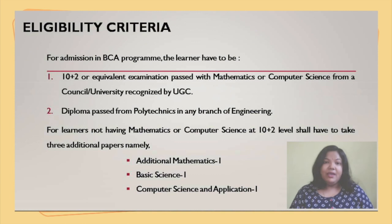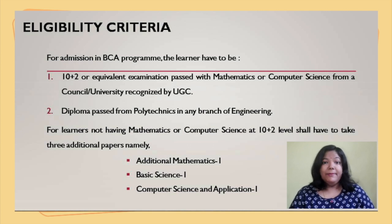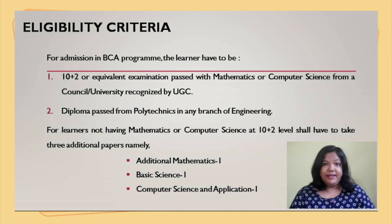Let us look at the eligibility criteria for admission into the BCA program. For admission in the BCA program, the learners have to be: Number 1, 10 plus 2 or equivalent examination pass with mathematics and computer science as a subject. And number 2, they can be a diploma pass from LE Polytechnic in any branch of engineering. For those students who want to pursue BCA but did not have mathematics or computer science at the 10 plus 2 level, they can opt for it by including three additional papers. These additional papers are additional mathematics, basic science, and computer science and applications.